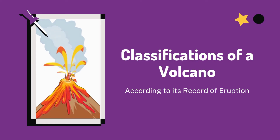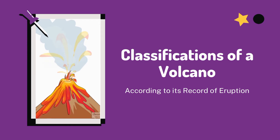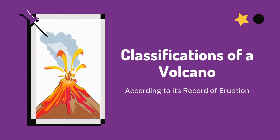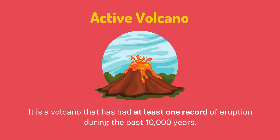There are several ways by which volcanoes can be classified. One of these is according to their record of eruption. The first classification is called Active Volcano. It is a volcano that has had at least one record of eruption during the past 10,000 years, meaning it has erupted and has shown volcanic activity. According to PHIVOLCS, there are 24 active volcanoes in the country. The following are some of the active volcanoes in the Philippines and their location — take a look at these volcanoes.